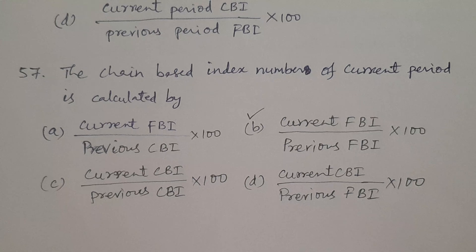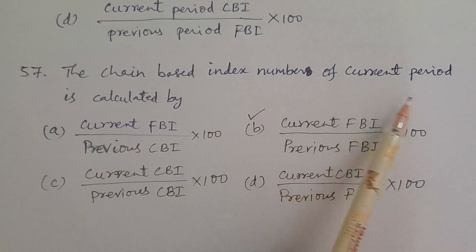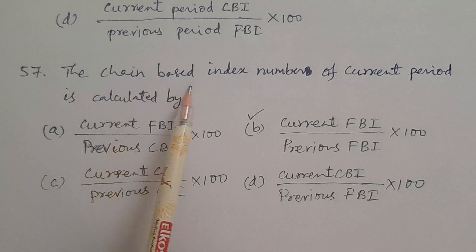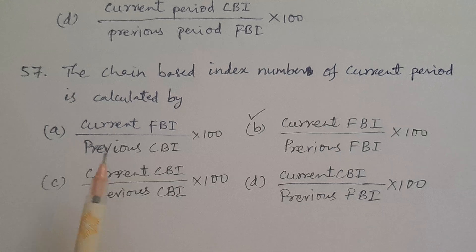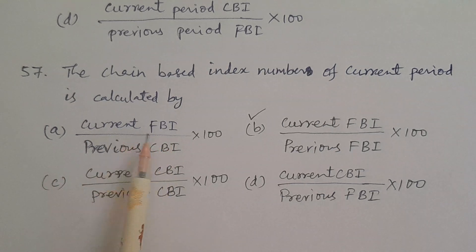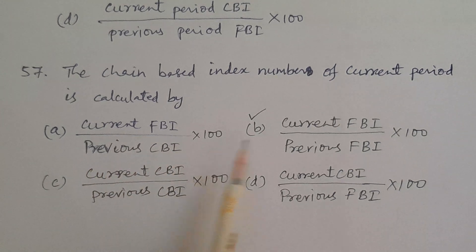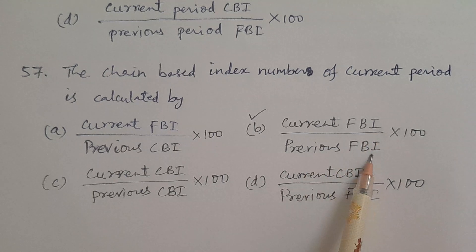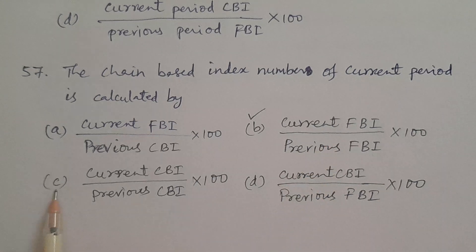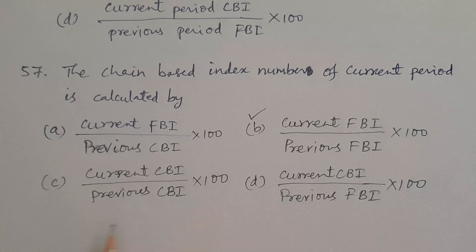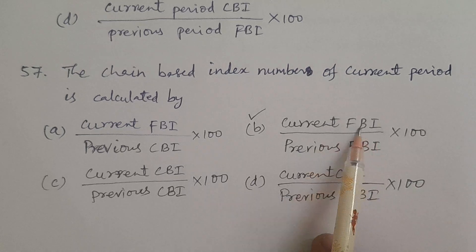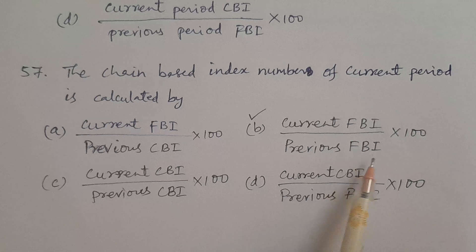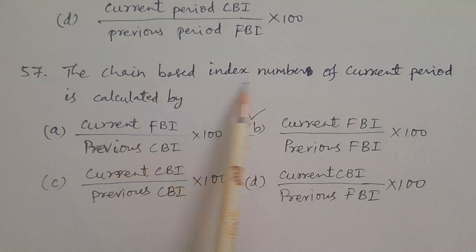Question number 57. The chain based index number of the current period is calculated by. Options: A. Current period FBI divided by previous period CBI into 100. B. Current FBI divided by previous FBI into 100 — this is the answer. C. Current CBI divided by previous CBI into 100. D. Current CBI divided by previous period FBI into 100. Answer is B: current FBI divided by previous period fixed base index number into 100.